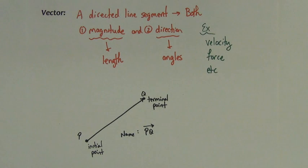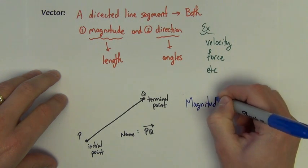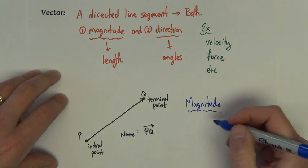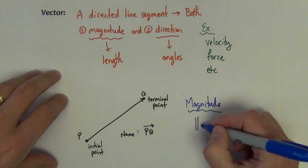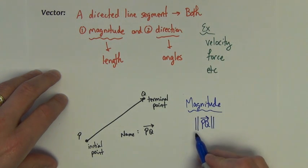When we talk about magnitude of a vector, let's talk about how we denote that. You're going to see these double absolute value bars put around the vector. Anytime you see that notation, it's indicating that you're asked to find or deal with the magnitude of the vector.